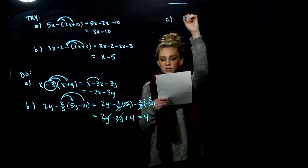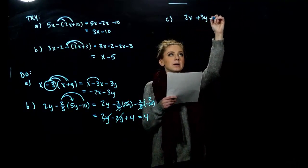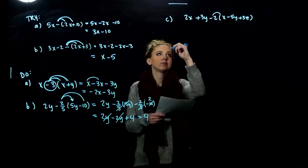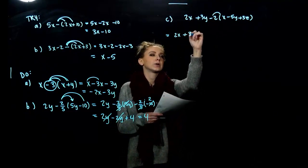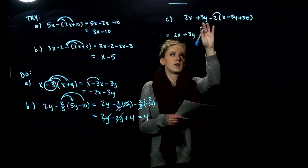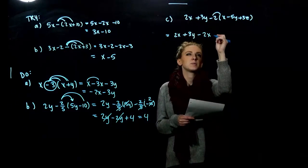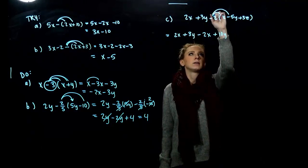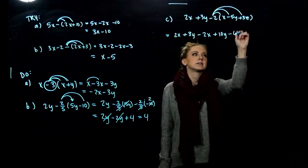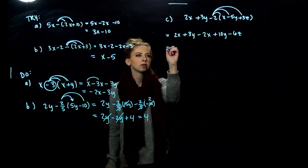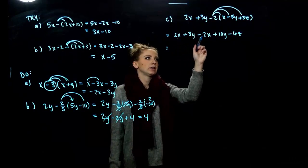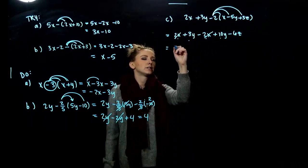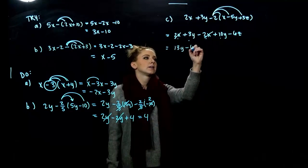Last example: 2x plus 3y minus 2 times the quantity. The parentheses do matter — distribute negative 2 into every single term on the inside. The first terms are unaffected. Negative 2 times the first term gives minus 2x; negative 2 times the second gives plus 10y; negative 2 times the third gives minus 6z. Combining like terms: the 2x and minus 2x cancel, leaving 13 factors of y and negative 6 factors of z, so 13y minus 6z.